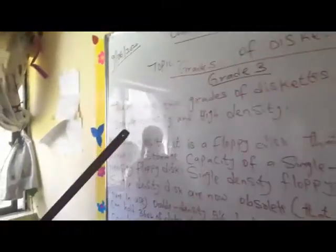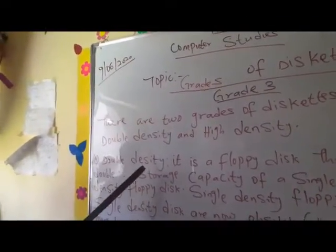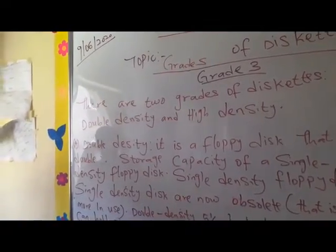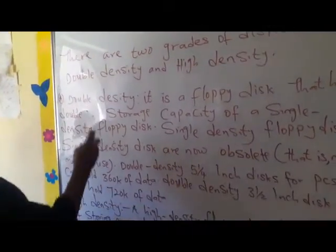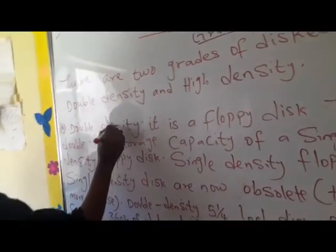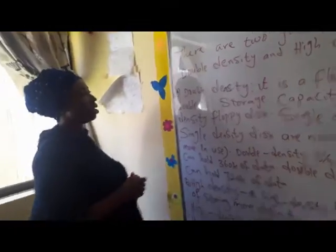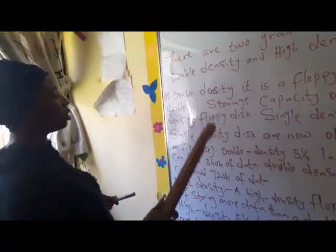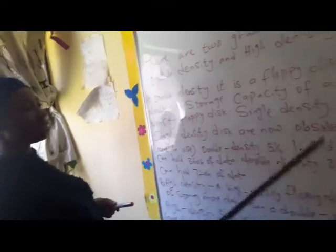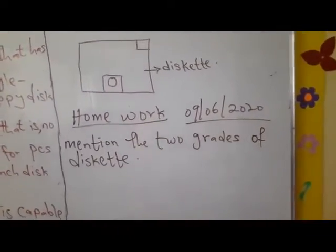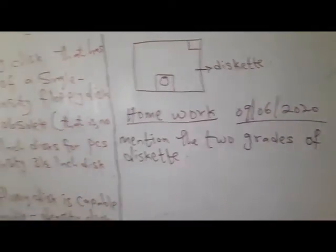And here, I said, we have double density and high density. Double density and high density. I hope you can see my handwriting there. Double density and high density. That is the two grades of diskette. You should just mention it without explanation.